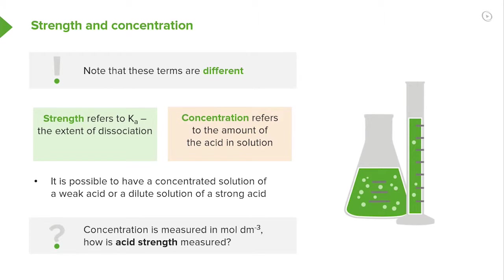Concentration is measured in moles per liter or moles per decimeter cubed. Often it's referred to as mole dm⁻³ and sometimes just as capital M, molar.